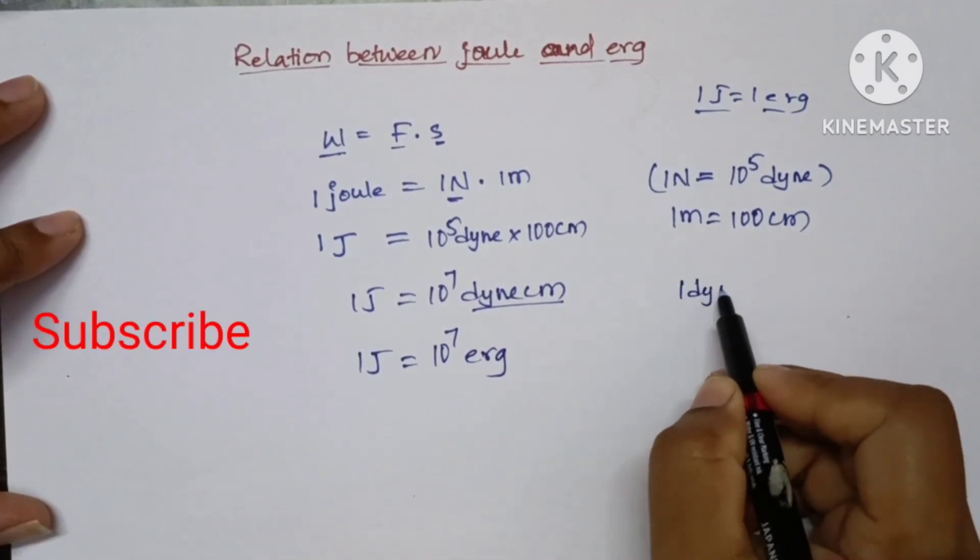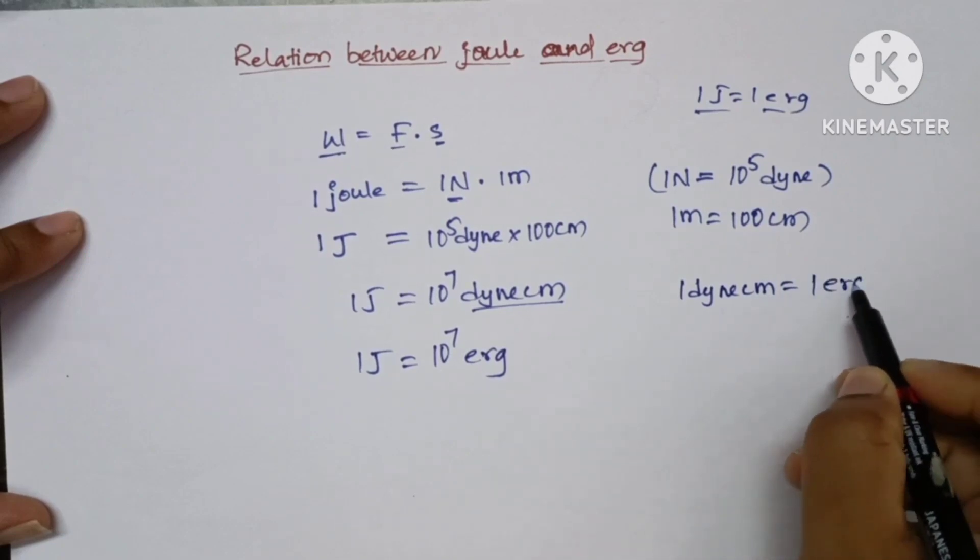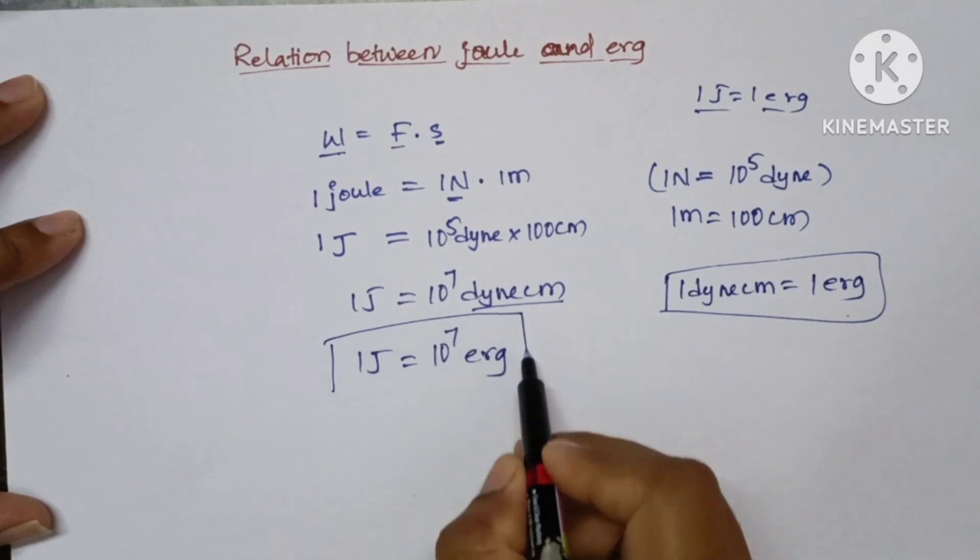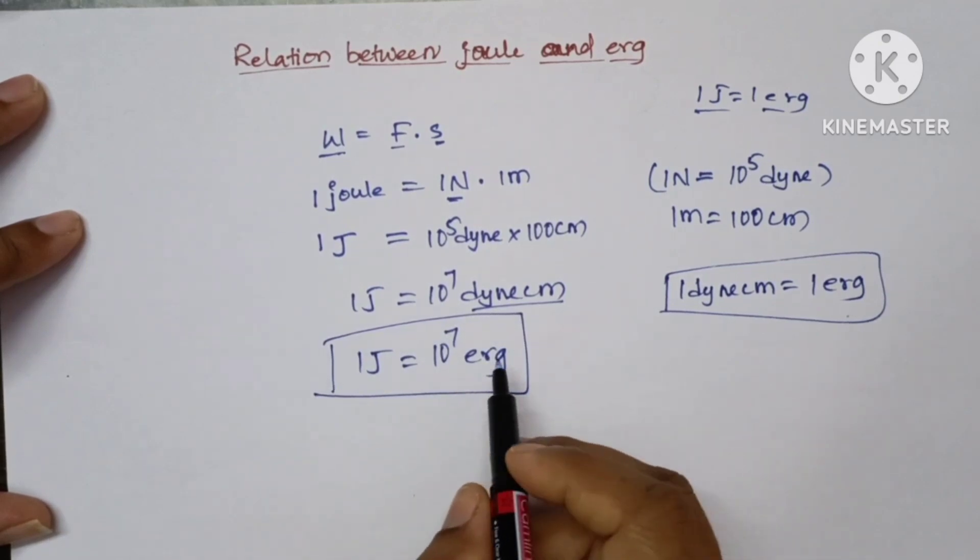1 dyne centimeter is equal to 1 erg, so we have replaced, so that 1 joule is equal to 10 to the power of 7 erg.